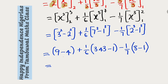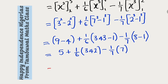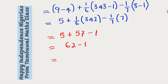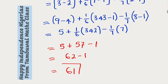This is equal to 9 minus 4, which is 5. Plus 1 divided by 6 of 342 — if you subtract 1 — minus 1 divided by 7, and in the bracket we have 8 minus 1 equal to 7. Still going: 342 divided by 6 is 57, minus 1 over 7 times 7 is equal to 1. This is equal to 5 plus 57 is 62, minus 1. And finally this is equal to 61 — and therefore this represents Nigeria at 61.